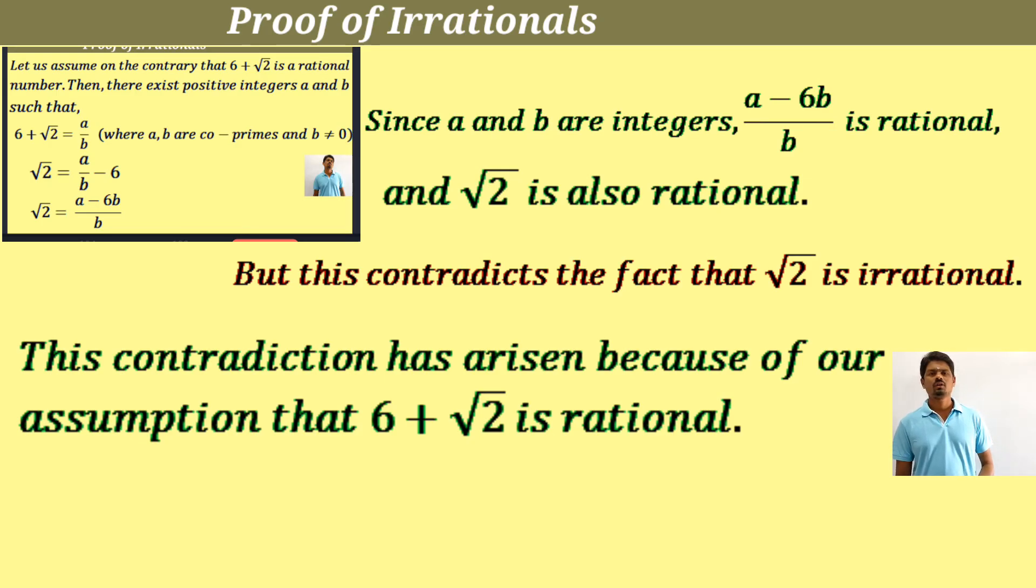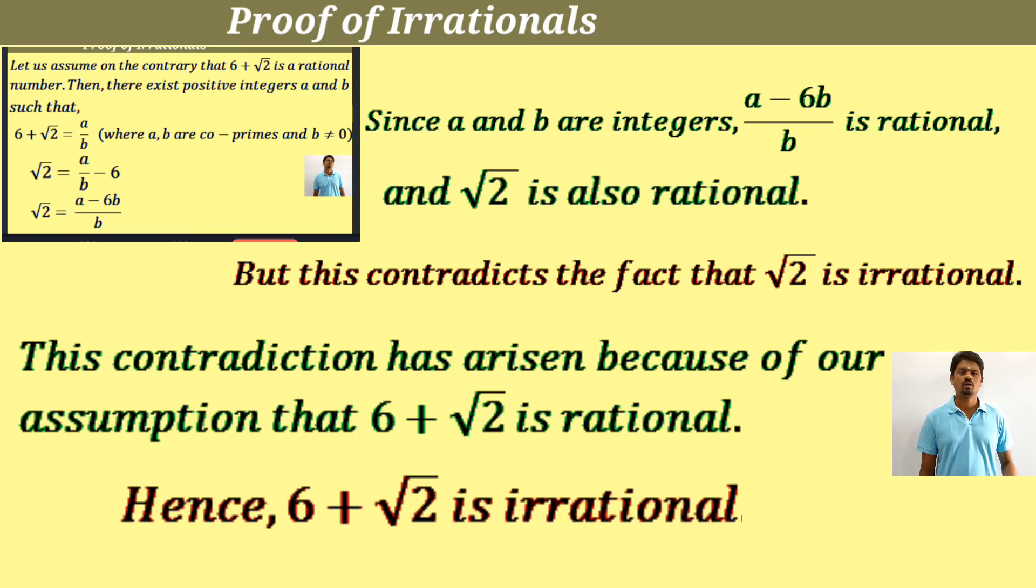Here we can conclude that 6 plus root 2 is not rational, it is irrational. Hence, we can say that 6 plus root 2 is irrational.